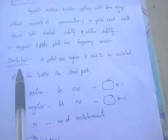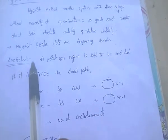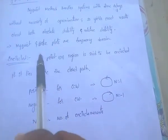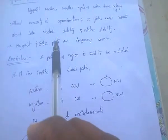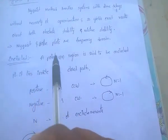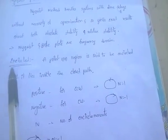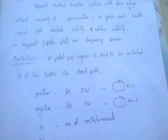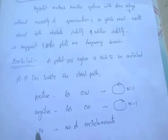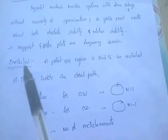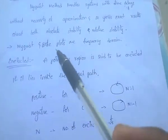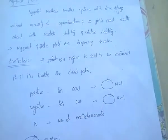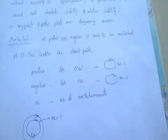We can also quickly determine the effect of adding extra poles and zeros by using the Bode plot — not the Nyquist plot. But in the BSNL and TTA previous papers, they have given the Nyquist plot. However, we can quickly determine using the Bode plot only.